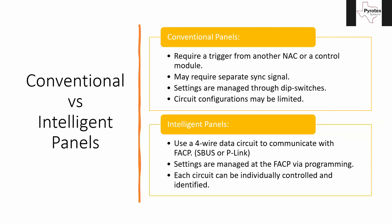The first thing to talk about: we have a couple different types of panels. One is conventional panels — these are the kind that have been around the longest. They require some kind of trigger to activate them. That trigger can come off of another NAC circuit within the building, from a control module, or a dedicated trigger circuit that comes off maybe the main control panel. That main trigger from the control panel can loop around and hit each NAC panel — the power supplies we're putting in.